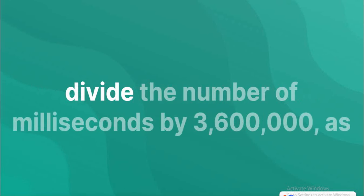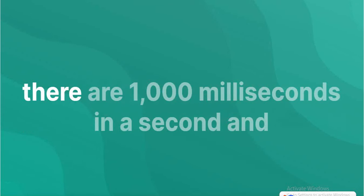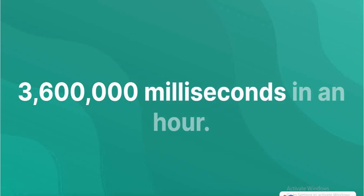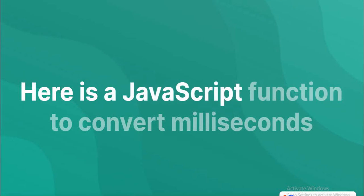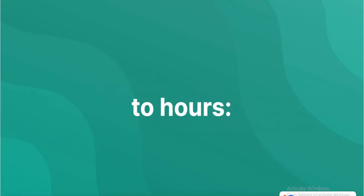Milliseconds to hours: you need to divide the number of milliseconds by 3,600,000, as there are 1,000 milliseconds in a second and 3,600,000 milliseconds in an hour. Here is a JavaScript function to convert milliseconds to hours.